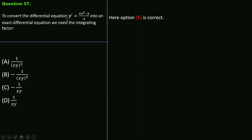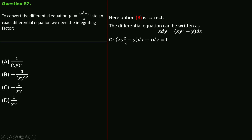The differential equation can be rewritten as dy/dx substituted: x·dy = (xy² - y)dx, giving (xy² - y)dx - x·dy = 0. This is in the form M·dx + N·dy = 0. For exactness, we need ∂M/∂y = ∂N/∂x.